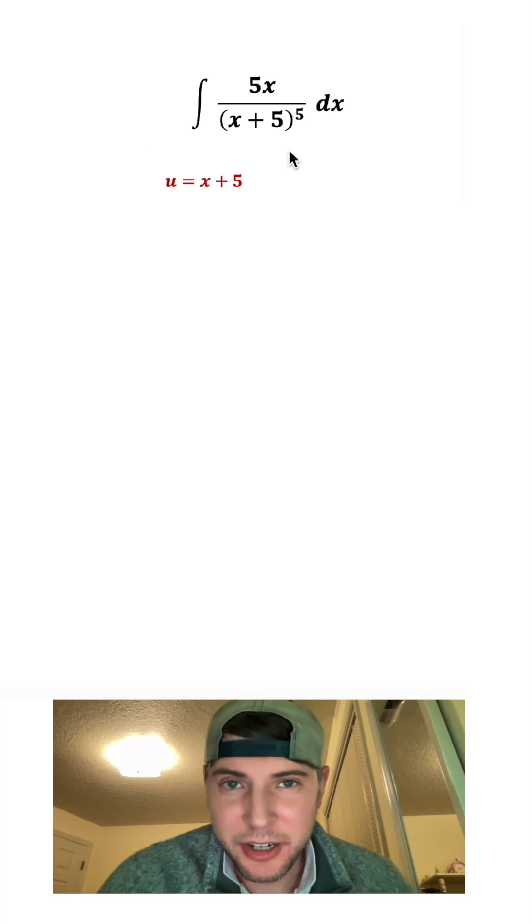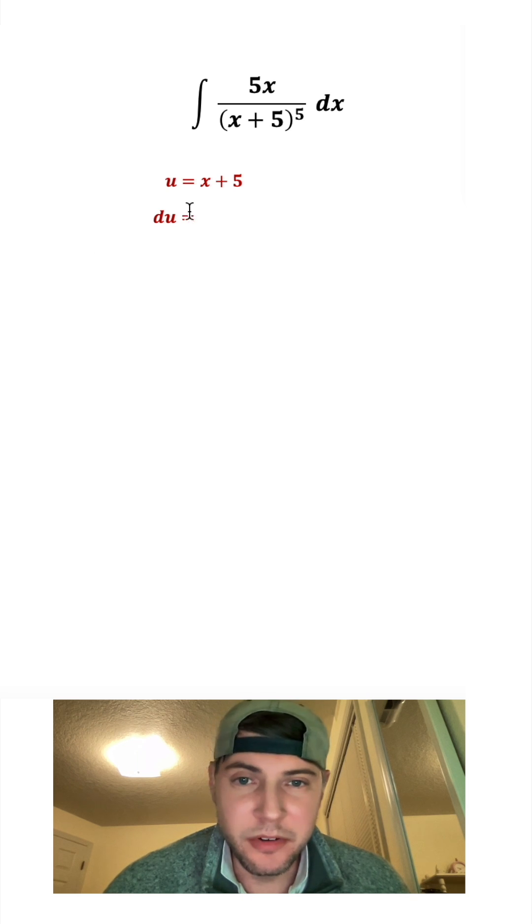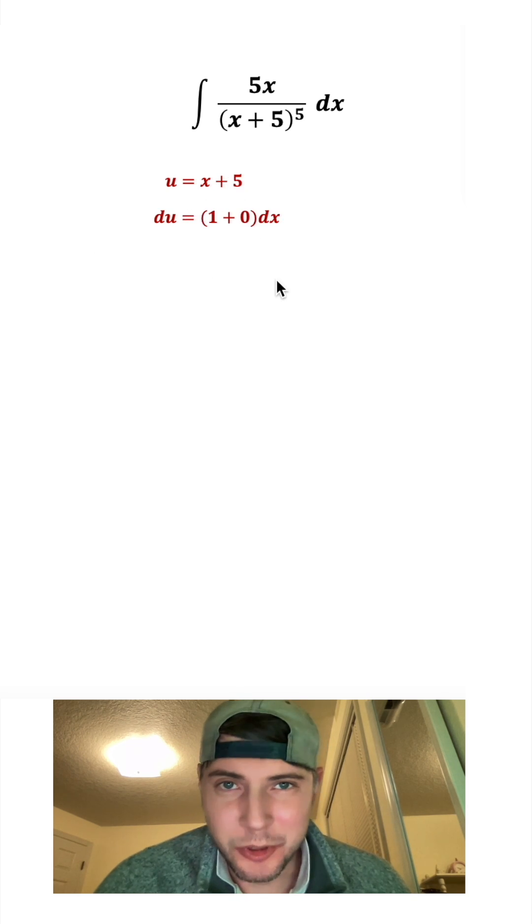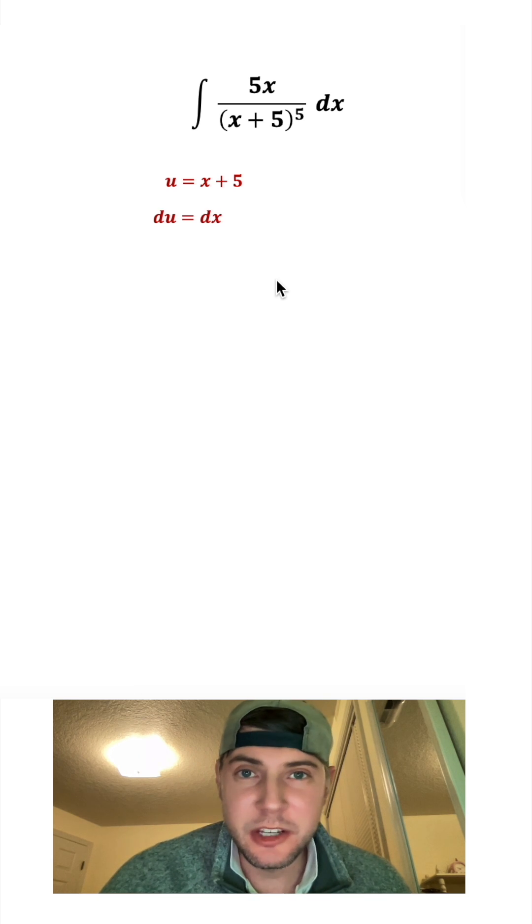I'm going to say u equal to x plus 5. And so du will be equal to the derivative of x, which is 1, and the derivative of 5, which is 0. And then all of this gets multiplied by dx. So ultimately, we have du is equal to dx.